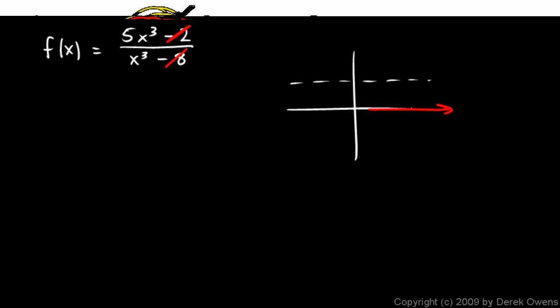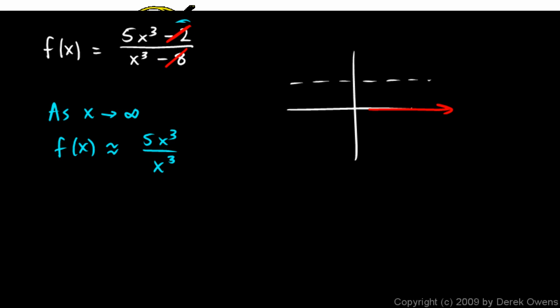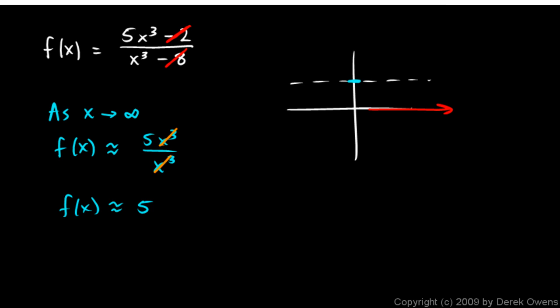So as x approaches infinity, this function f(x) behaves very similar to 5x³/x³. I've just dropped out the lower power terms. 5x³/x³ simplifies nicely—the x³ cancels, so f(x) is approximately equal to 5. That's where our horizontal asymptote is: the line y = 5.